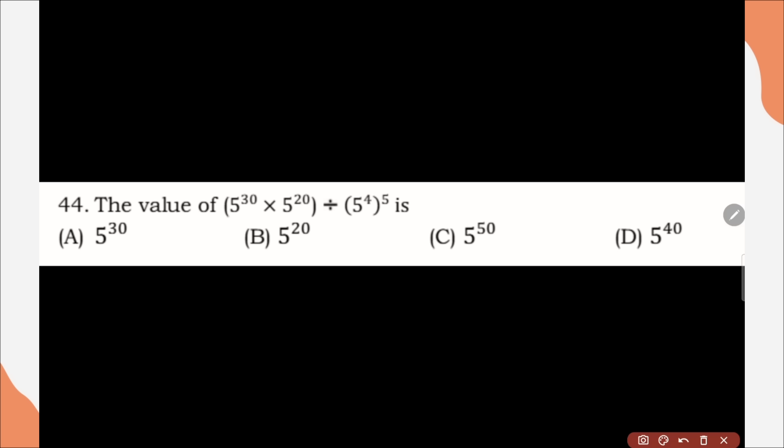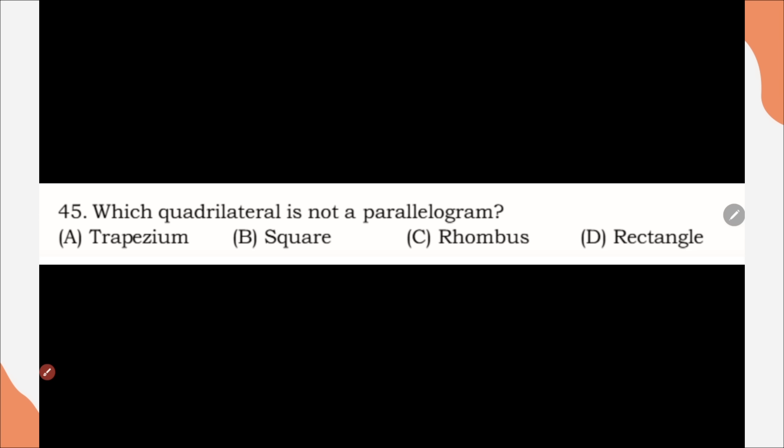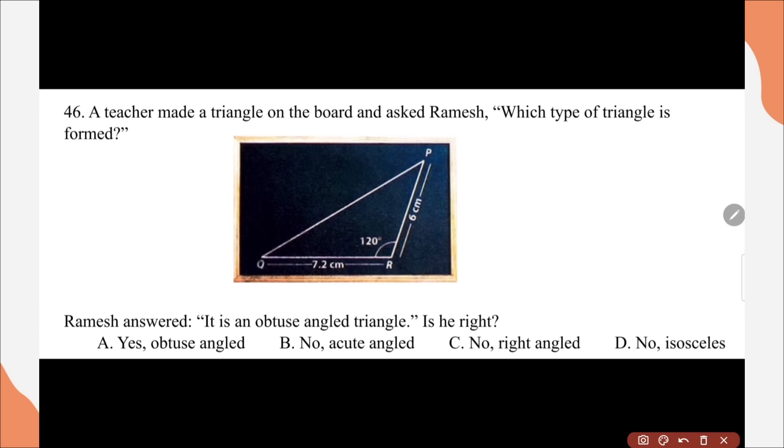Question number 44, the value of 5 to the power 30 into 5 to the power 20 divided by 5 to the whole power 5 is. Here, correct option is option A, 5 to the power of 30. Question number 45, which quadrilateral is not a parallelogram? Correct option is option A, trapezium. Question 46, a teacher has made a triangle on board and ask Ramesh, which type of triangle is formed? And Ramesh's answer, it's an obtuse angle triangle. Is he right? Correct option is option A, yes.